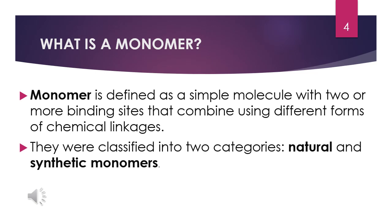Monomers are classified into two categories: natural and synthetic monomers. Natural monomers are molecules that exist in nature and join together to form larger biological molecules. Examples include monosaccharides, amino acids, nucleotides, isoprene, fatty acids, and alcohols.